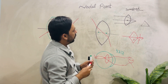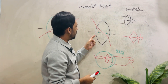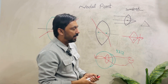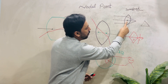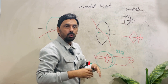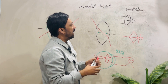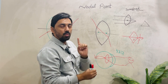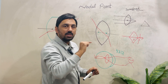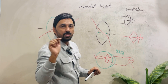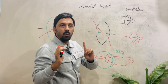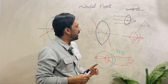Let's look at another concept of the nodal point in thick lenses. In a thin lens, the center point is called the optical center. But in thick lenses, this optical center converts into two points — these two points are called the nodal points. In a thin lens, there is one point at the center called the optical center, and light passing through it goes straight ahead. But when the lens is thick, there is no single optical center; instead it splits into two different points called the nodal points.